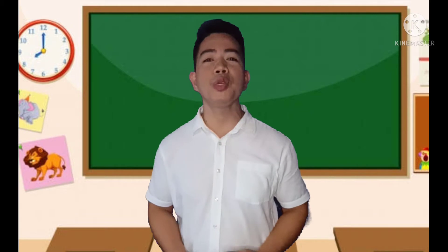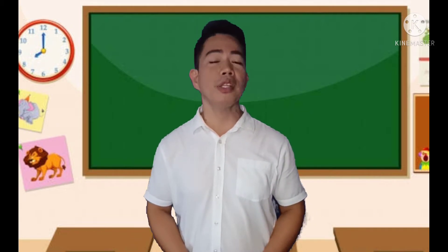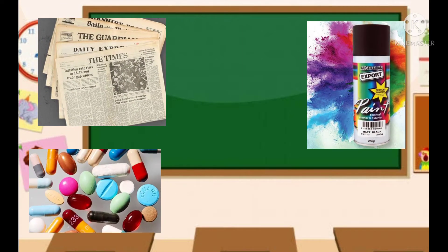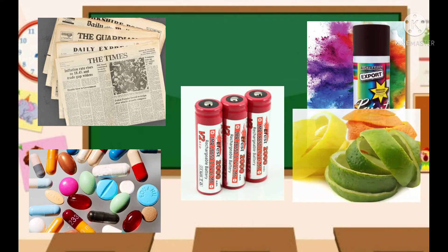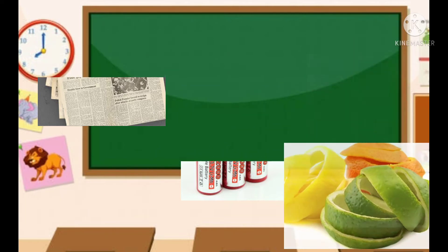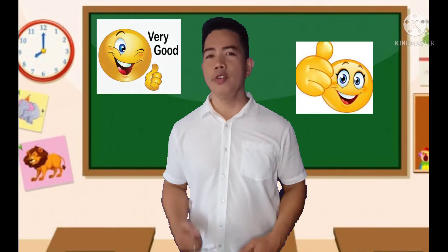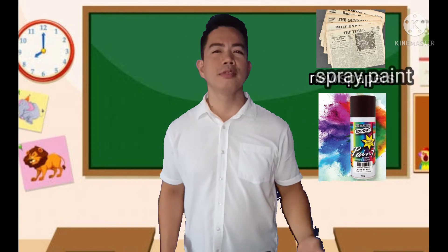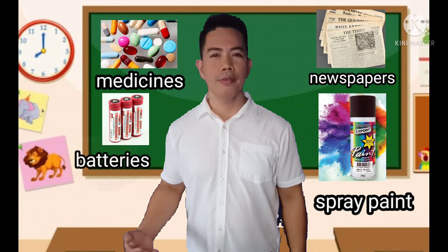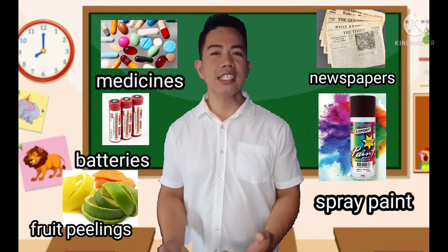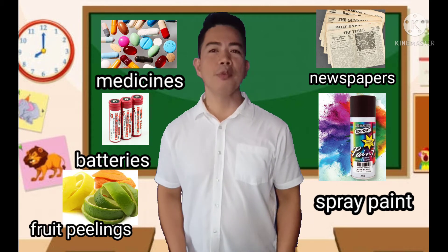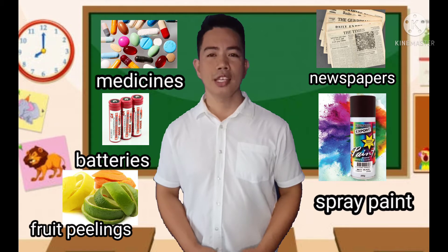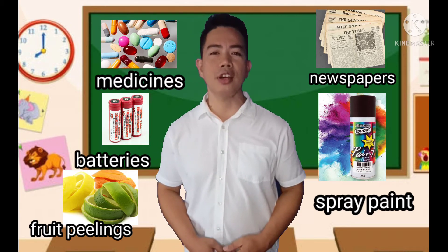All of these have different properties that make them different from each other. I will show you some pictures — identify what these materials or things are. Very good! These are newspaper, spray paint, medicine, batteries, and proteins.